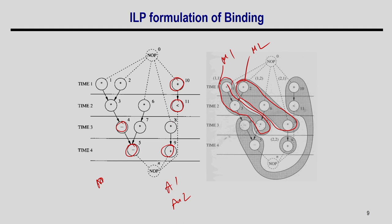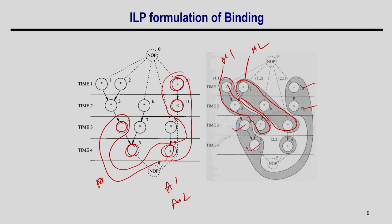Solving gives 2 ALUs. A possible mapping: ops 9, 10, 11, 5, and 4 all on ALU1 since they run at different timestamps (1, 2, 3, 3, and 4 respectively), while ALU2 executes only op9.